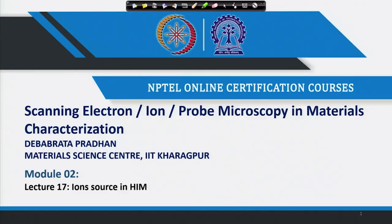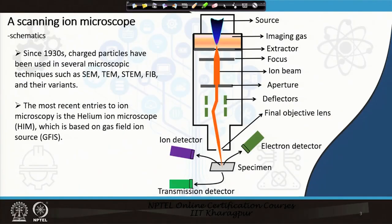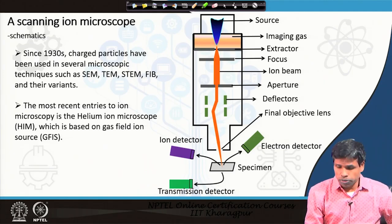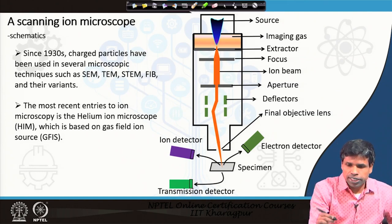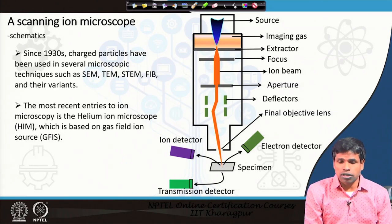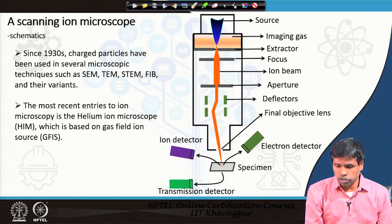Today we will see how ions are generated in the helium ion microscope. Let us first look at a schematic diagram of the scanning ion microscope before we talk about the ion source. The schematic is not much different in arrangement, but there are certain differences compared to the scanning electron microscope.